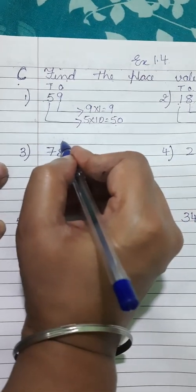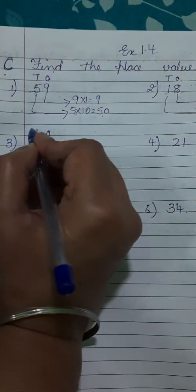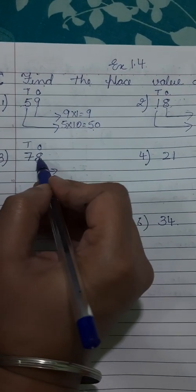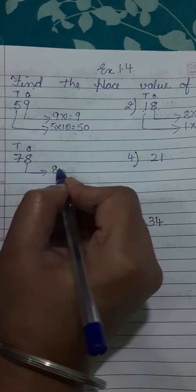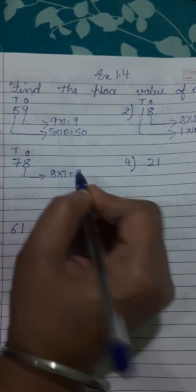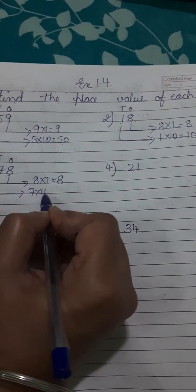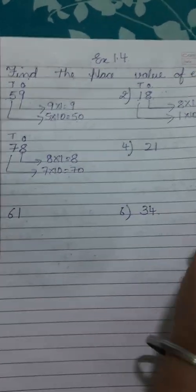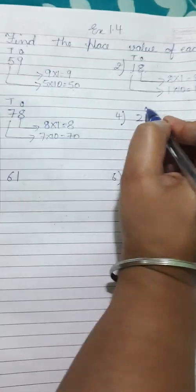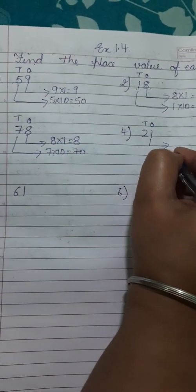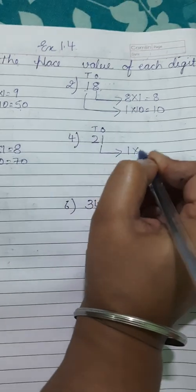Next number: the place value of seven is seven into ten, which is equal to seventy. Next number: the place value of six is six into ten.